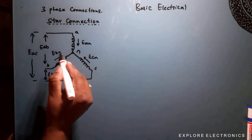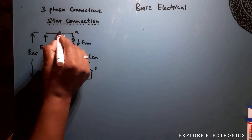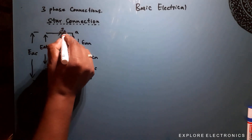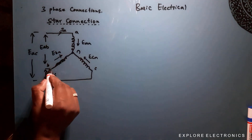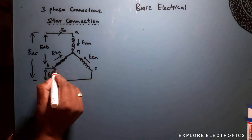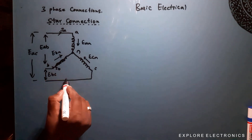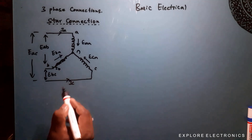By looking at the circuit we can see the current flowing through each line: IA flows through line A, IB flows through line B, and similarly IC flows through line C.